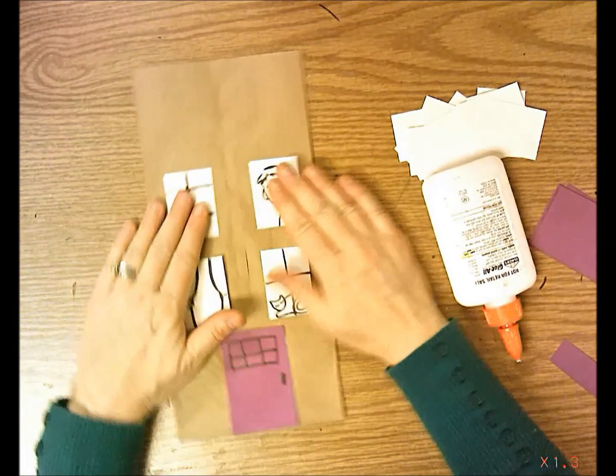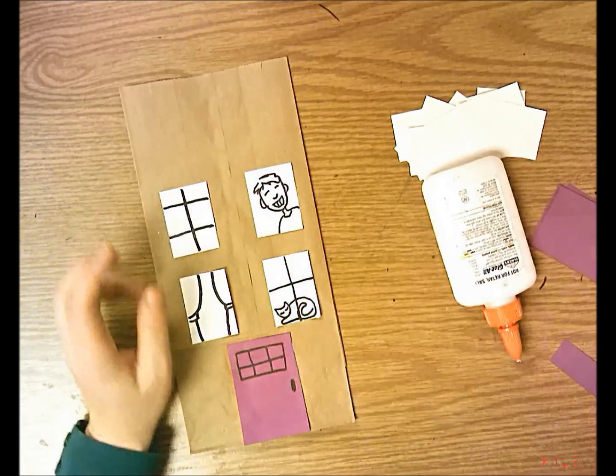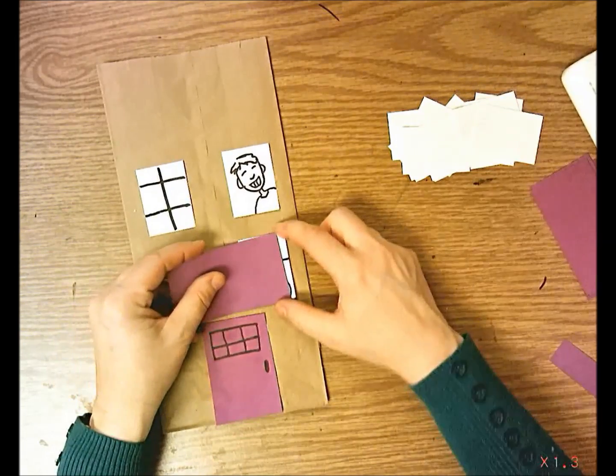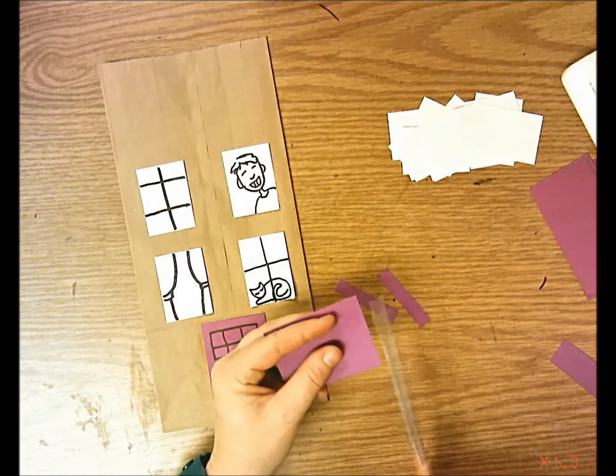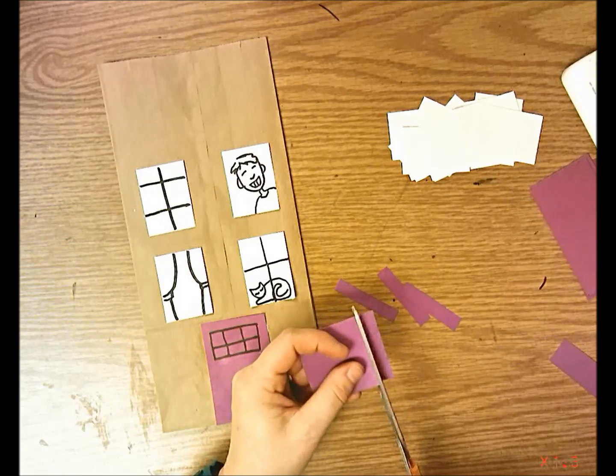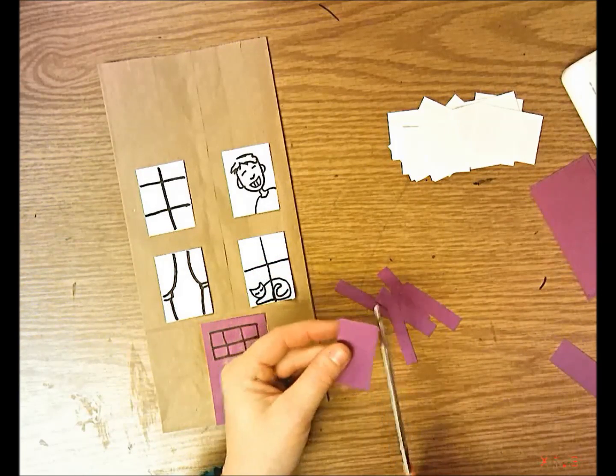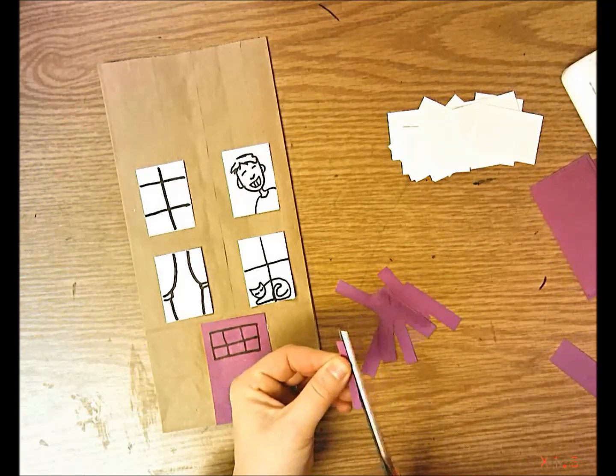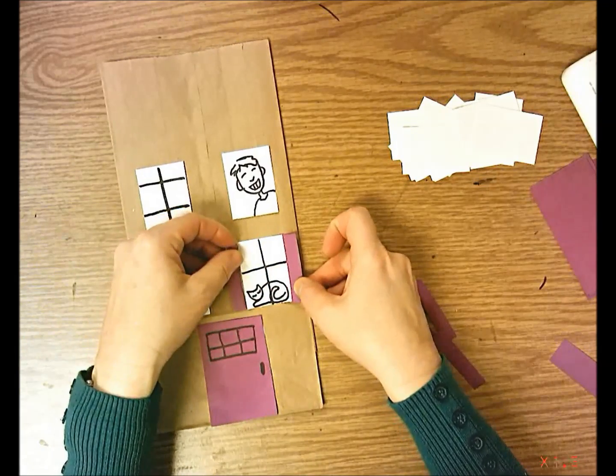The fronts of houses and buildings sometimes have shutters. Shutters might be nice to add. If you get a colored piece of paper, make sure it's the height of your window, then cut some skinny strips. You need two for each window. So I have four windows, so I need eight skinny strips, two for each window.